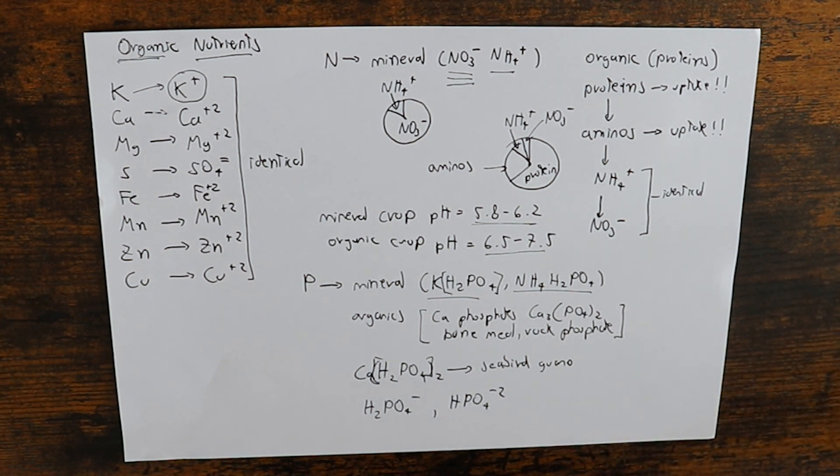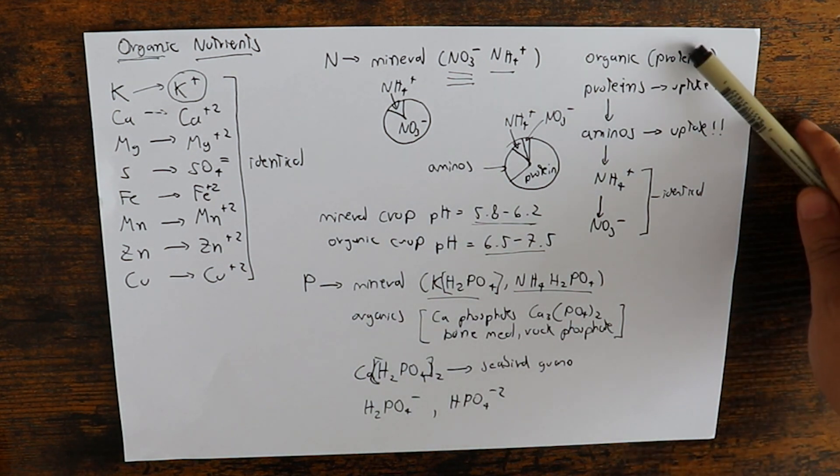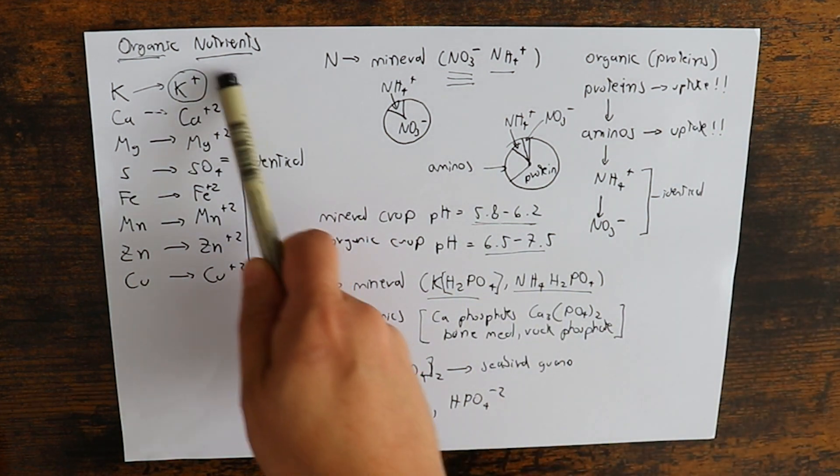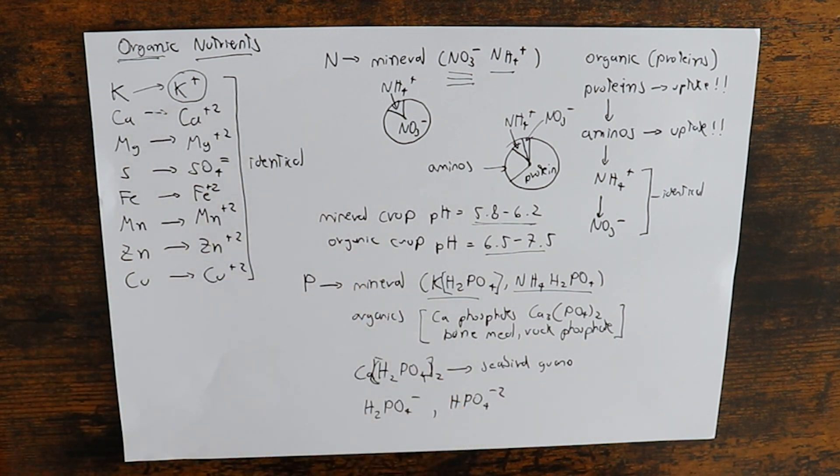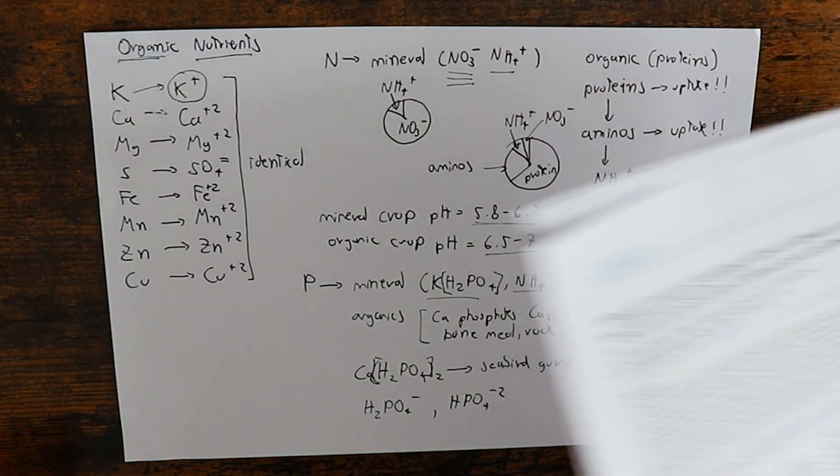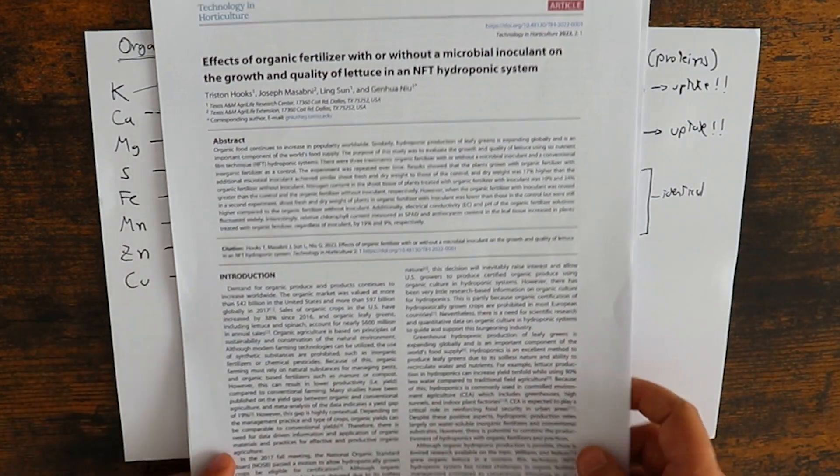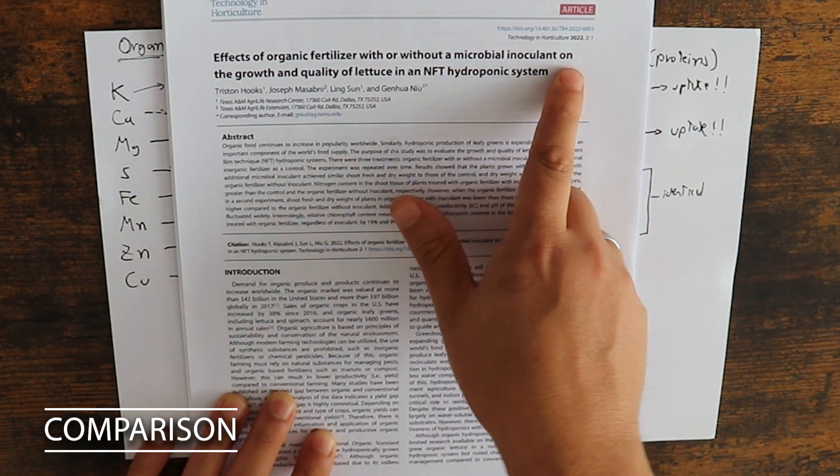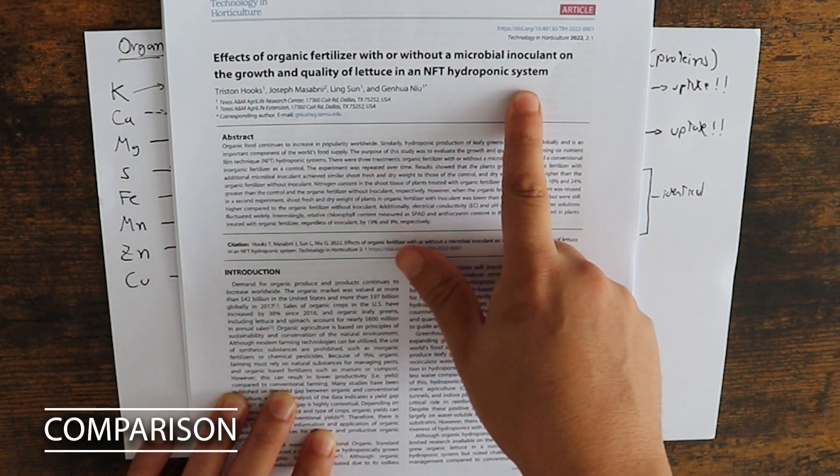Now, to that note, we need to talk about are they better or worse. So is it better to have an organic solution where we have this process, where we have organic decomposition of proteins, where we have a higher pH, and where these are all basically in identical forms? Or is it better to just do like a regular hydroponic crop with mineral nutrients? So without going into the environmental sustainability of either approach, let's talk about whether in terms of yields and quality there is any difference. For that, I'm going to refer to this paper, Effects of Organic Fertilizer with or Without Microbial Inoculant on the Growth and Quality of Lettuce in an NFT hydroponic system.